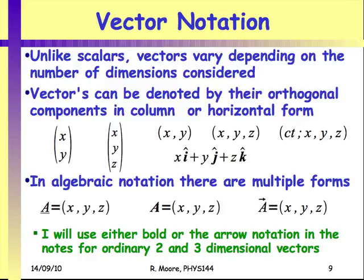You can write a vector in column notation or horizontal notation — for example, a four-vector from relativity. Or you can write it as a sum of unit vectors where i, j, and k are the unit vectors. Algebraically, you'll see it written three ways: with an underline, in boldface, or with a little arrow over the top. I'm going to always try to use the arrow notation because it's very explicit that I'm talking about a vector.